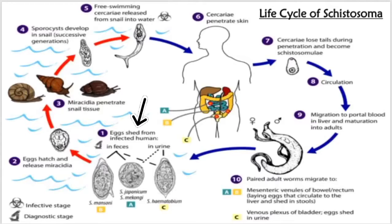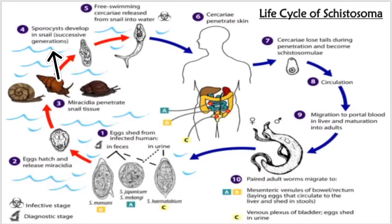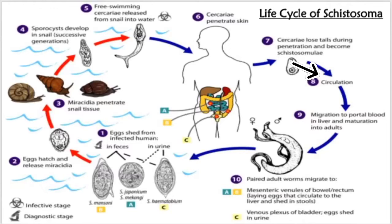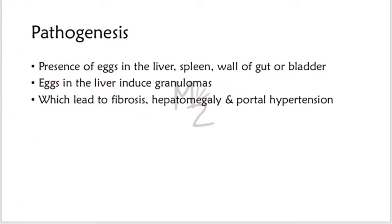The diagrammatic life cycle starts when eggs are shed from the infected human in the urine or feces. The three species can be distinguished by the appearance of their eggs under the microscope. Eggs hatch and release miracidia; the miracidia penetrate snail tissue. Sporocysts develop into free-swimming cercariae, which are released from the snail into water. Cercariae penetrate the skin, lose their tails during penetration, and become schistosomula. They then enter the circulation to the portal blood in the liver, mature into adult flukes, and migrate to the mesenteric venules or venous plexus of the bladder, where eggs are shed.